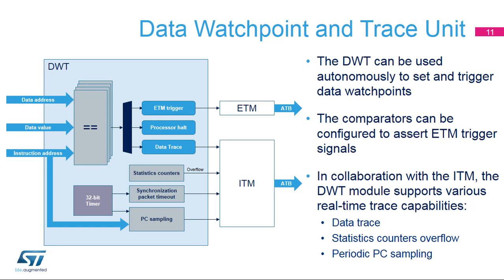In addition to the comparison logic, the DWT contains 8-bit statistics counters. When an overflow condition occurs on any of them, the DWT informs the ITM to issue a trace packet to report this overflow to the debugger. The DWT is also in charge of triggering the periodic generation of synchronization packets, which are mandatory to maintain synchronization with the trace port analyzer. This is achieved by a 32-bit timer, which can also be used to trigger the periodic sampling of the PC value, passed to the ITM to be stored in a trace packet.